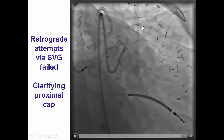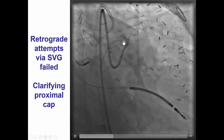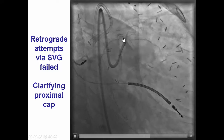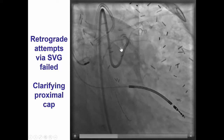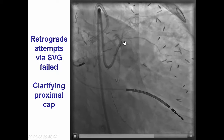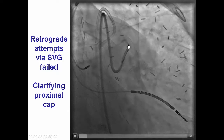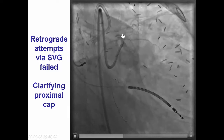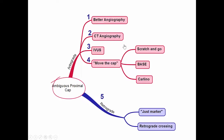The maneuver we chose is the scratch and go maneuver. We advanced a stiff guidewire proximal to the proximal cap and caused a small dissection, as can be seen in this view. This is an example of the scratch and go technique, one of the techniques that can be used to resolve proximal cap ambiguity.